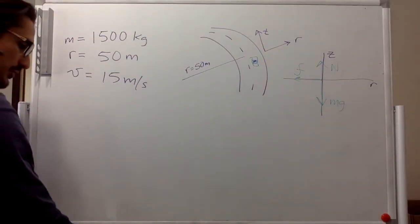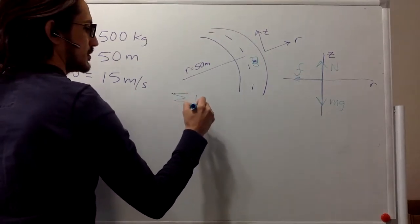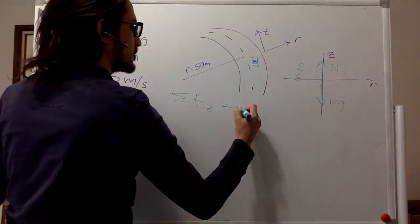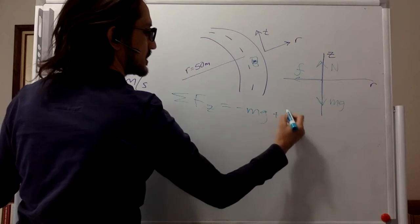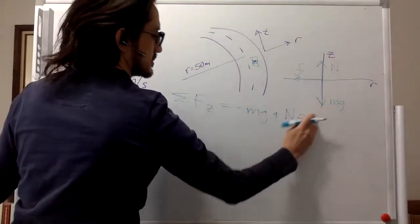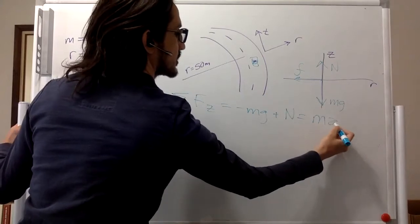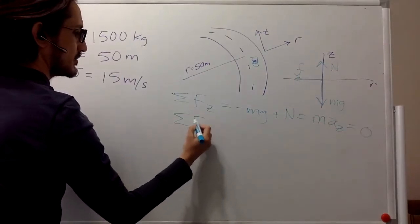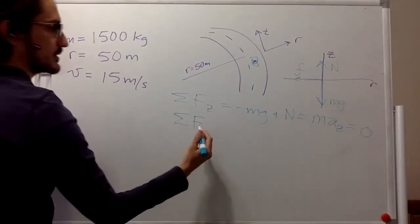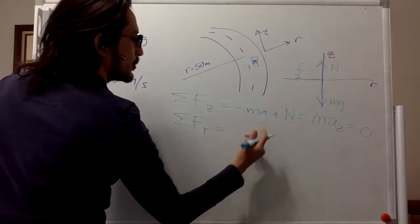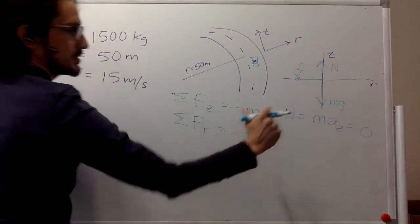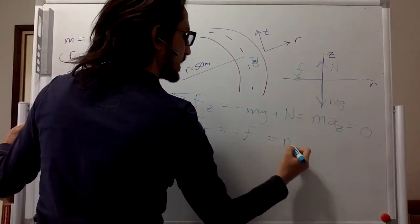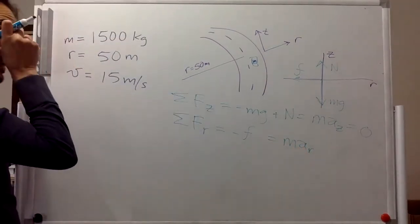There is a weight, mg, and a normal force going up, so the car hopefully is not going to move up or down in the vertical direction. And there is a force of friction — it's the centripetal force — and it's what is keeping the car moving along this curve. The sum of forces in the z direction: minus mg plus N equals zero. And the sum of forces in the radial direction — we only have friction, which is in the negative direction — equals mass times acceleration in the radial direction.